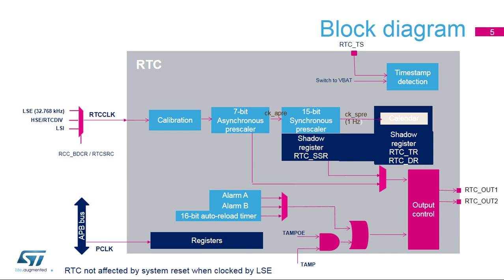The RTC clock is first divided by a 7-bit programmable asynchronous prescaler, which provides the CKAPRE clock. Most of the RTC is clocked at the CKAPRE frequency. So, in order to reduce power consumption, it is recommended to set a high asynchronous division value. The default value is 128.